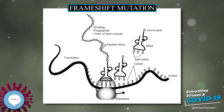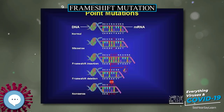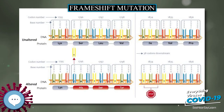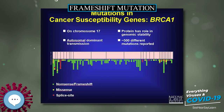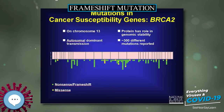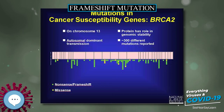Several diseases have frameshift mutations as at least part of their cause. Knowing prevalent mutations can also aid in the diagnosis of the disease. Currently, there are attempts to use frameshift mutations beneficially in the treatment of diseases by changing the reading frame of the amino acids.